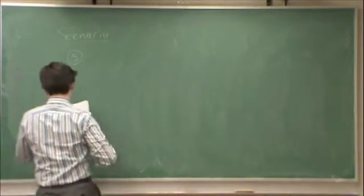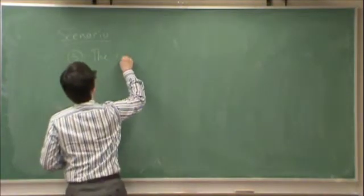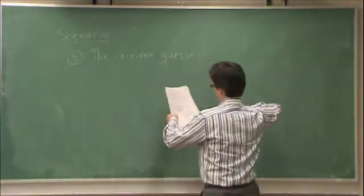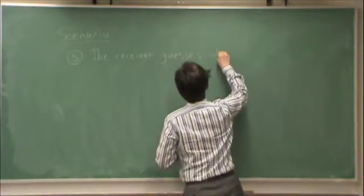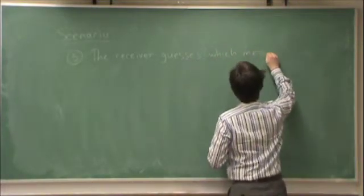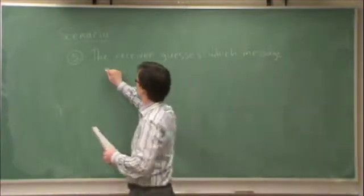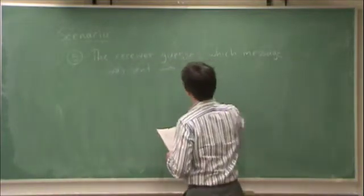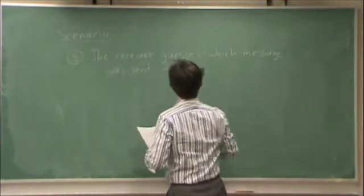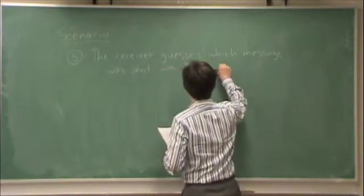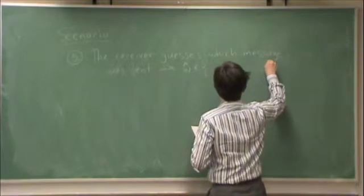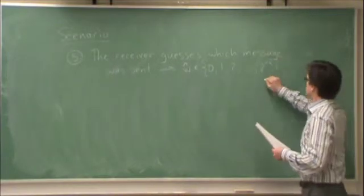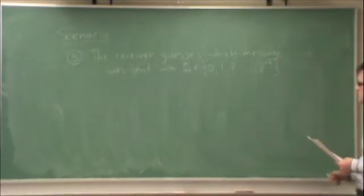Next step is decoding. So the receiver guesses which message was sent. We will let the receiver's guess be equal to w hat. W hat can take values in, well, firstly, one, two, and so on up to two to the nr, but we also allow zero. Remember, that zero letter signifies a decoding failure. In other words, the receiver is giving up.